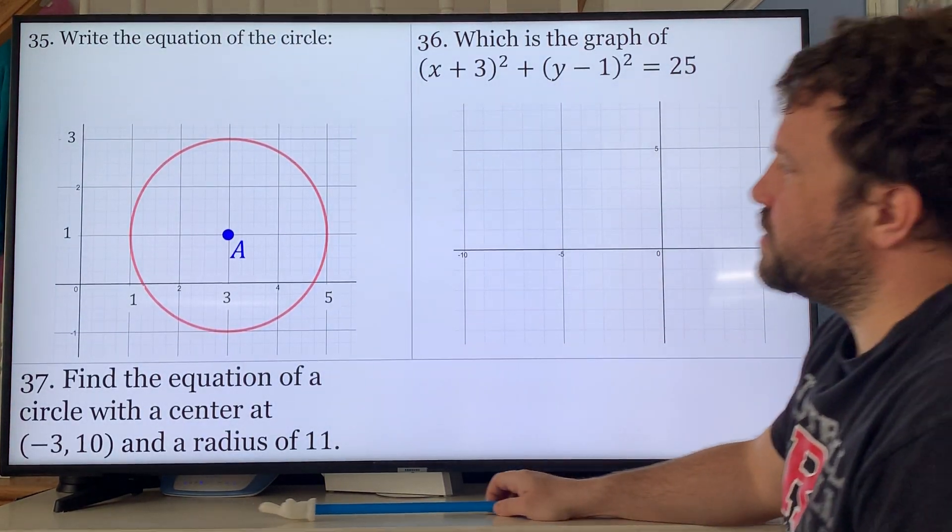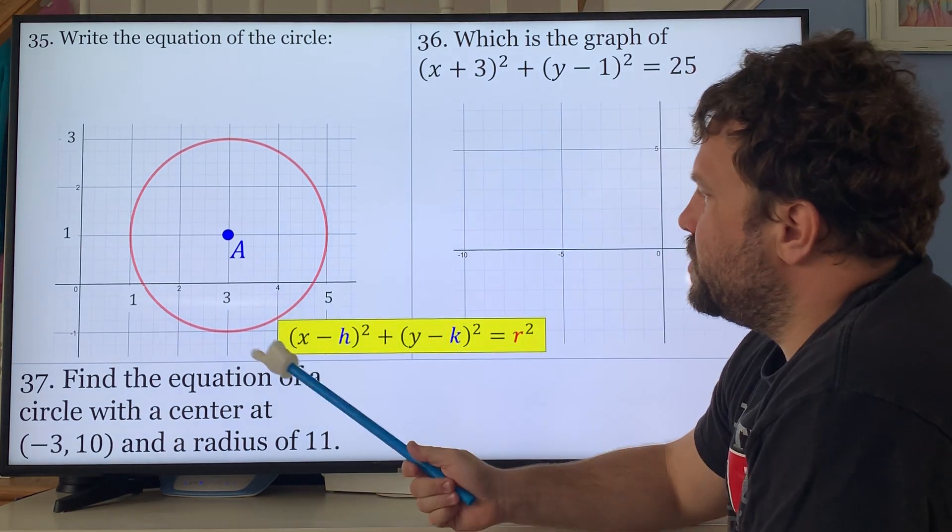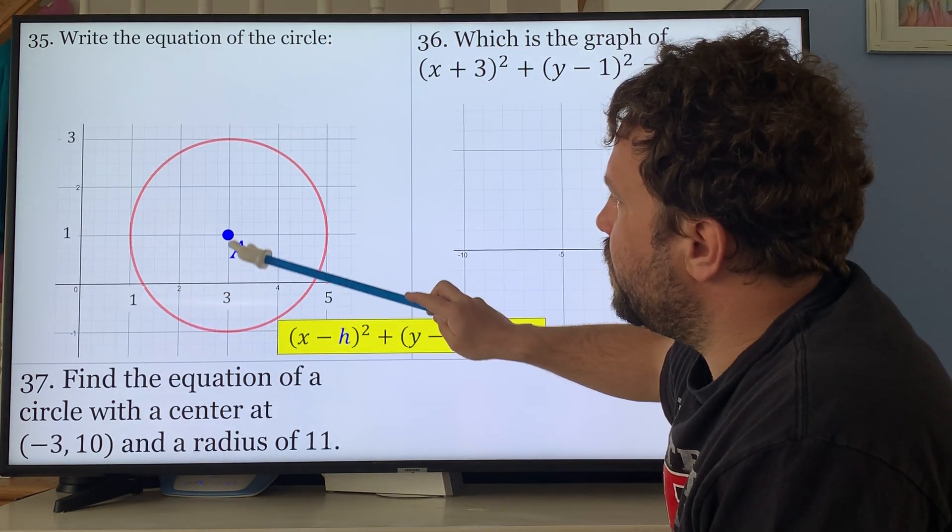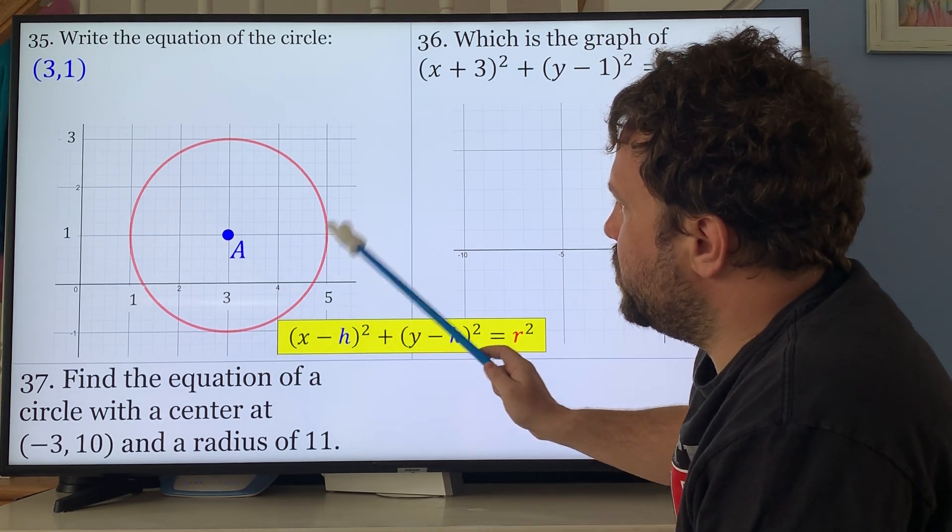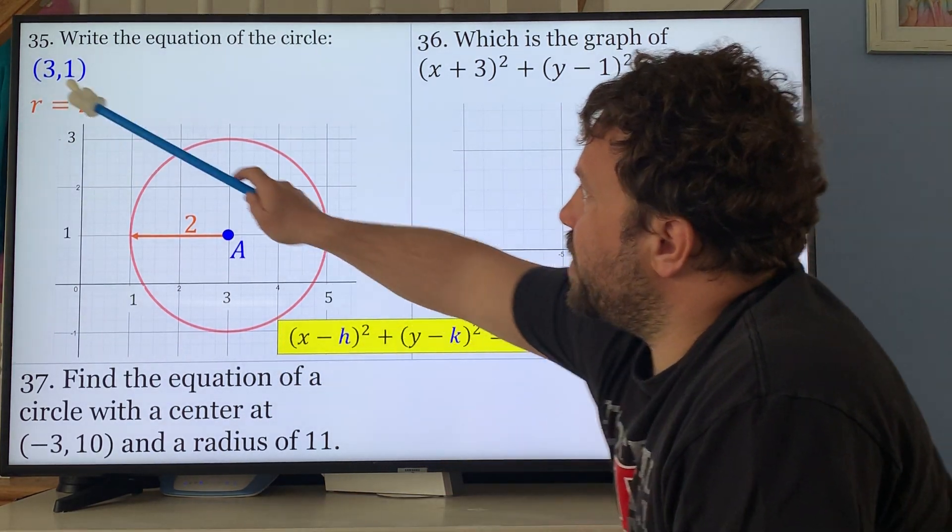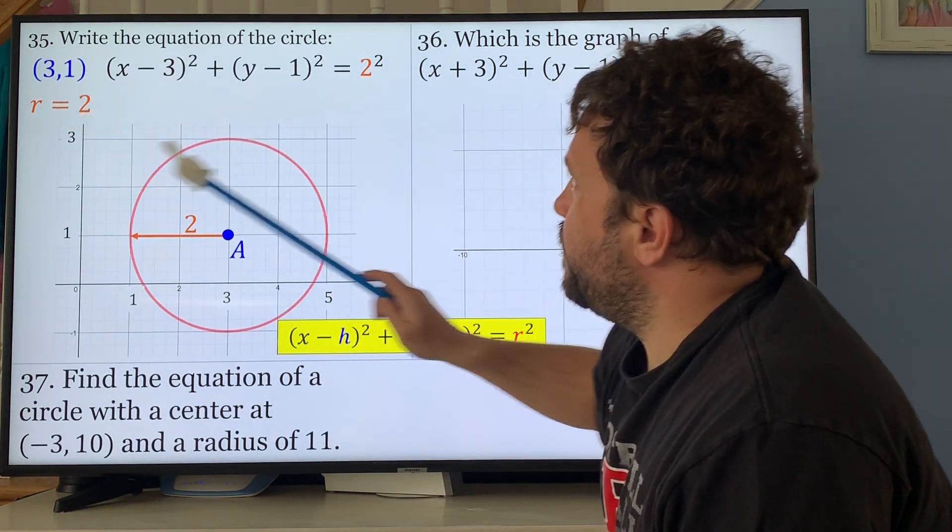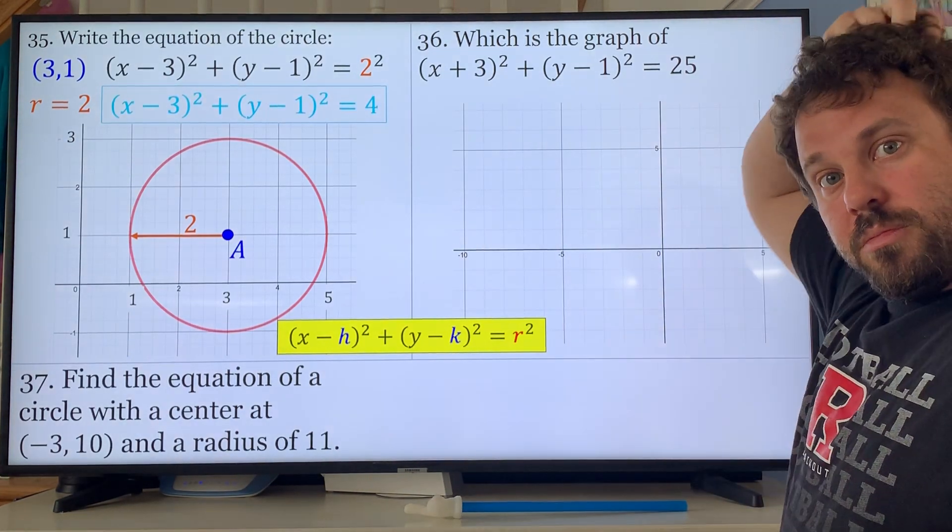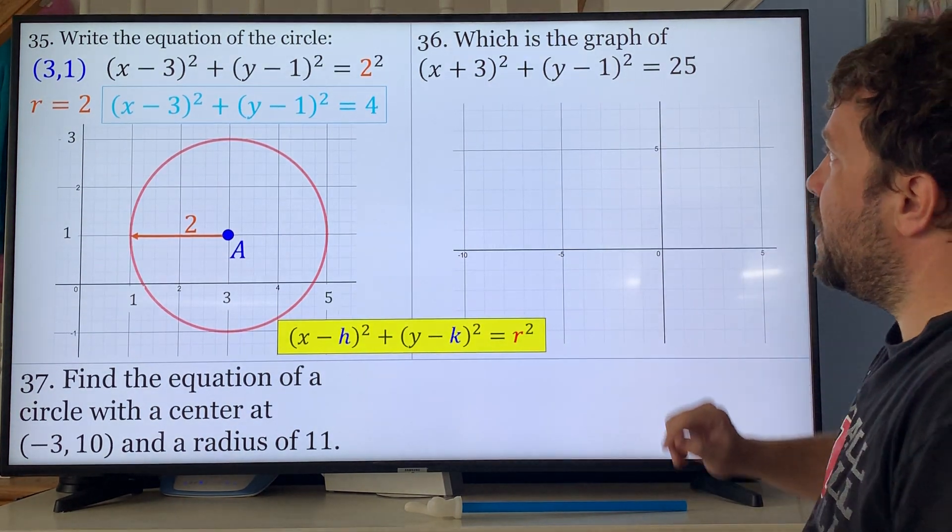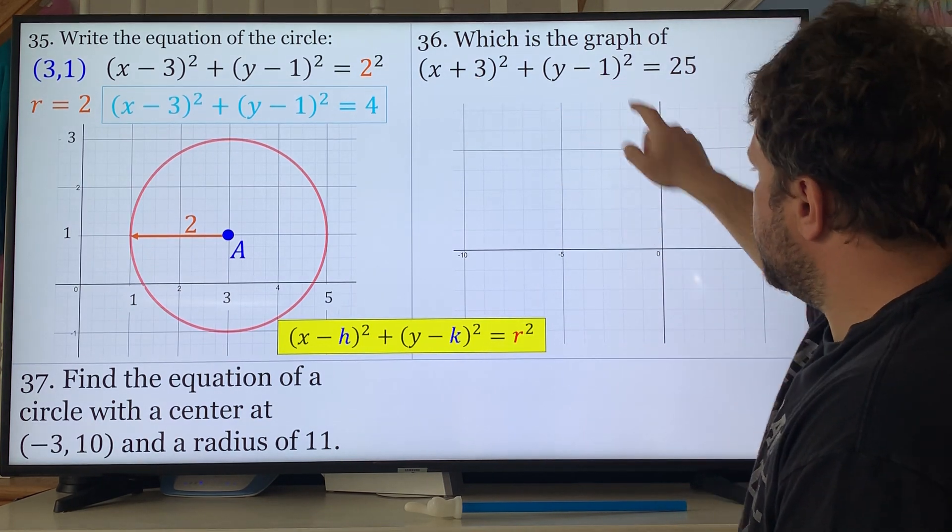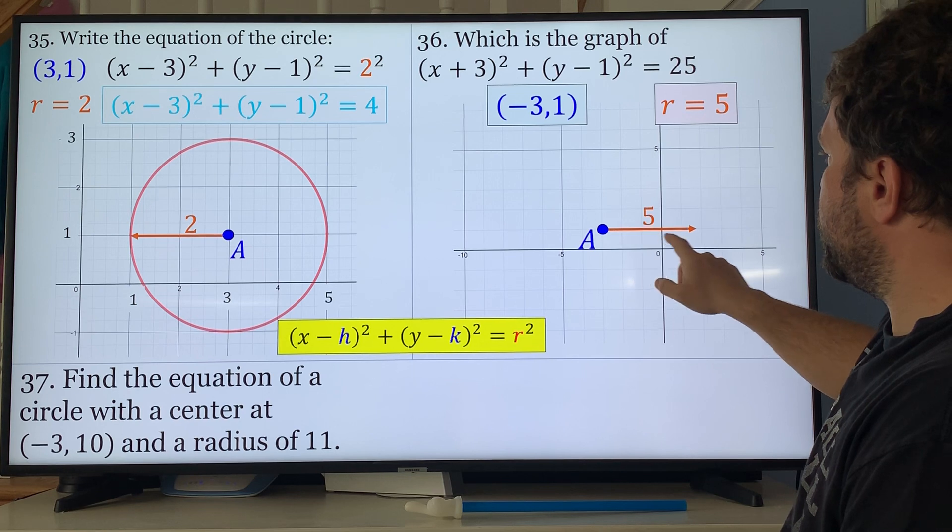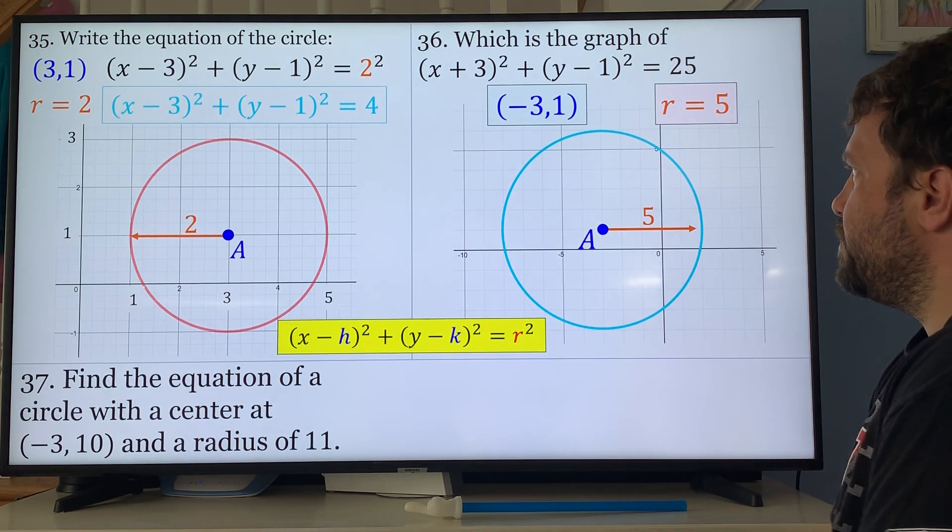All right, finished up with equations of circles, last three questions. Write the equation of a circle. You should remember it's (x - h)² + (y - k)² = r². First thing you have to do is find the center: 3 over, 1 up, so the center is (3, 1). Then you find the radius: 1, 2. You can go either way, it doesn't matter. So the radius is 2. So (x - 3)² + (y - 1)² = 2², which is 4. I told you to become experts at these.